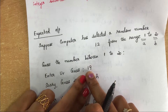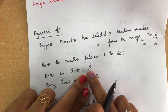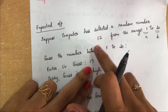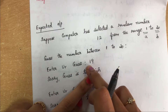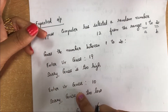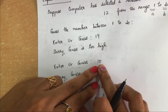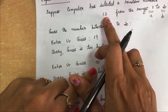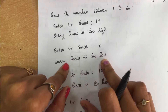The user enters a guess of 19. We compare 12 and 19 — they do not match, and 19 is too high, so we display 'Sorry, the guess is too high.' We then ask for another guess. The user enters 10. Comparing 10 and 12, this number is too low, so we display 'Sorry, the guess is too low.'